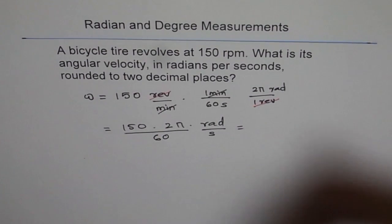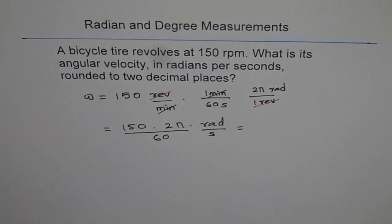So that gives us the answer straight away. You don't really have to think very hard, just think about converting units. That's kind of key here. Okay, so let me multiply this: 150 times two times pi divided by 60.